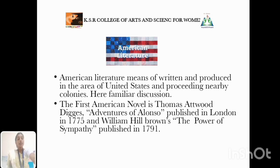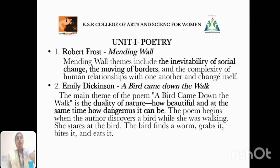The first American novel, Adventure of Alenzo, was written by Thomas Edward and published in London in 1775. And William Hill Brown's The Power of Sympathy was published in 1791.